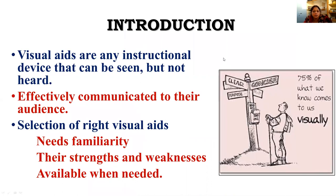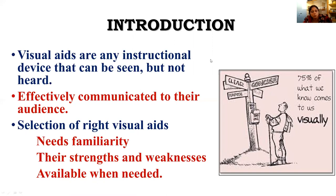Visual aids are any instructional devices that can be seen but not heard. I have covered this topic before — what are visual aids, what are audio-visual aids, and what are audio aids. Visual aids, as the name indicates, are things we can see. For effective communication we need visual aids, and the very important point one should consider while selecting a visual aid is what is right for a particular situation or technology to be disseminated. You must also be familiar with the aid you are selecting.